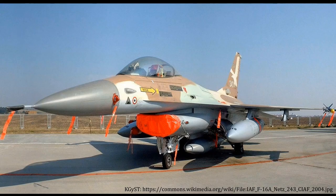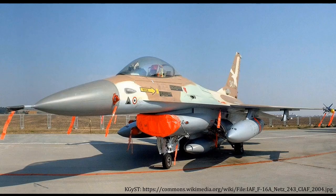The OSIRAQ facility also concerned Israel, and armed with Iranian intelligence they set out to finish the job Iran had started. On June 7, 1981, a squadron of F-15s and F-16s — including this exact F-16 — set out toward Iraq. This was a more challenging bombing run than what Iran had faced, since Israel does not share a border with Iraq. The aircraft went to the south of Israel, deliberately avoided Jordan, flew over Saudi Arabia, dropped their payloads on OSIRAQ, and then returned roughly the same way they came.